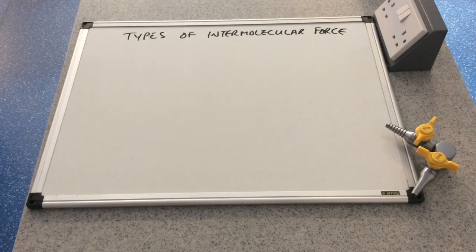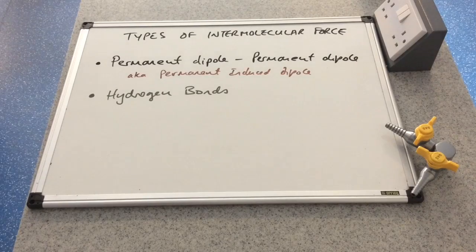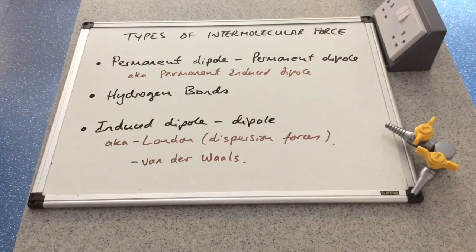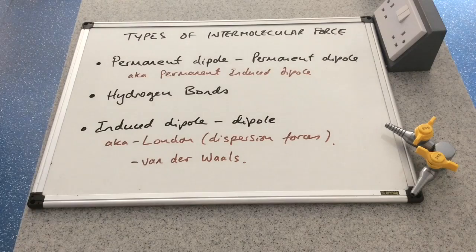In this video, I'm going to look at the different types of intermolecular force. We've got permanent dipole-permanent dipole intermolecular forces, also known as permanent induced dipole forces. We've got hydrogen bonds. And finally, we've got induced dipole-dipole forces, also known as London forces or London dispersion forces, and even Van der Waals forces. I'll take each of these in turn and explain with some examples how they arise.